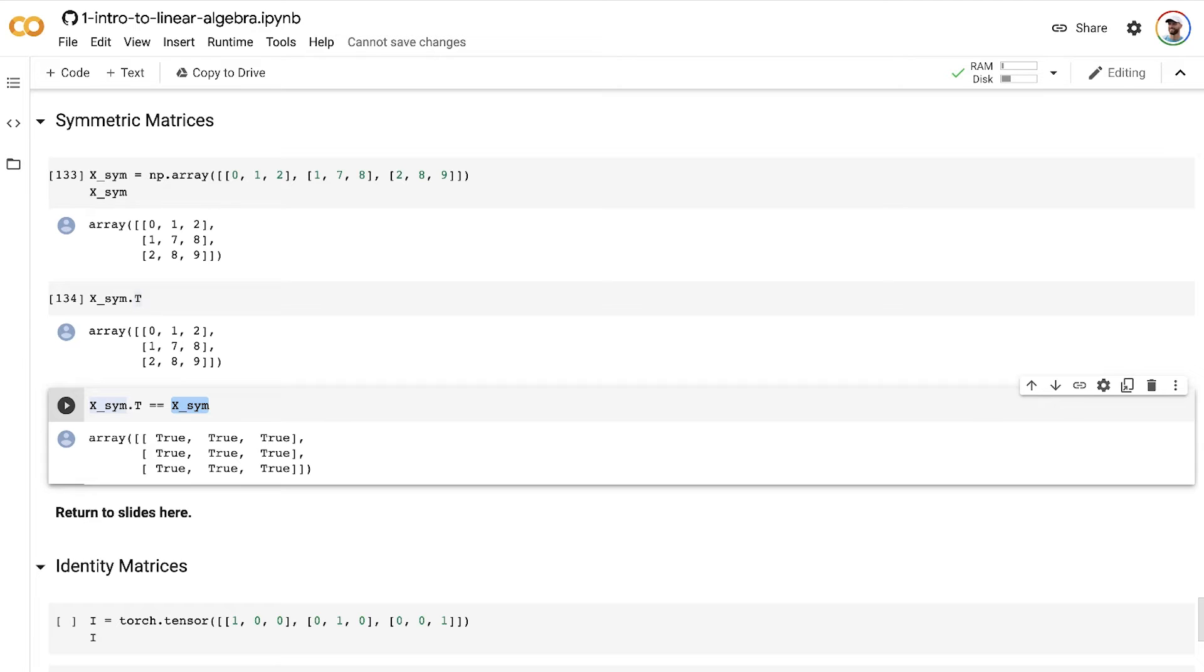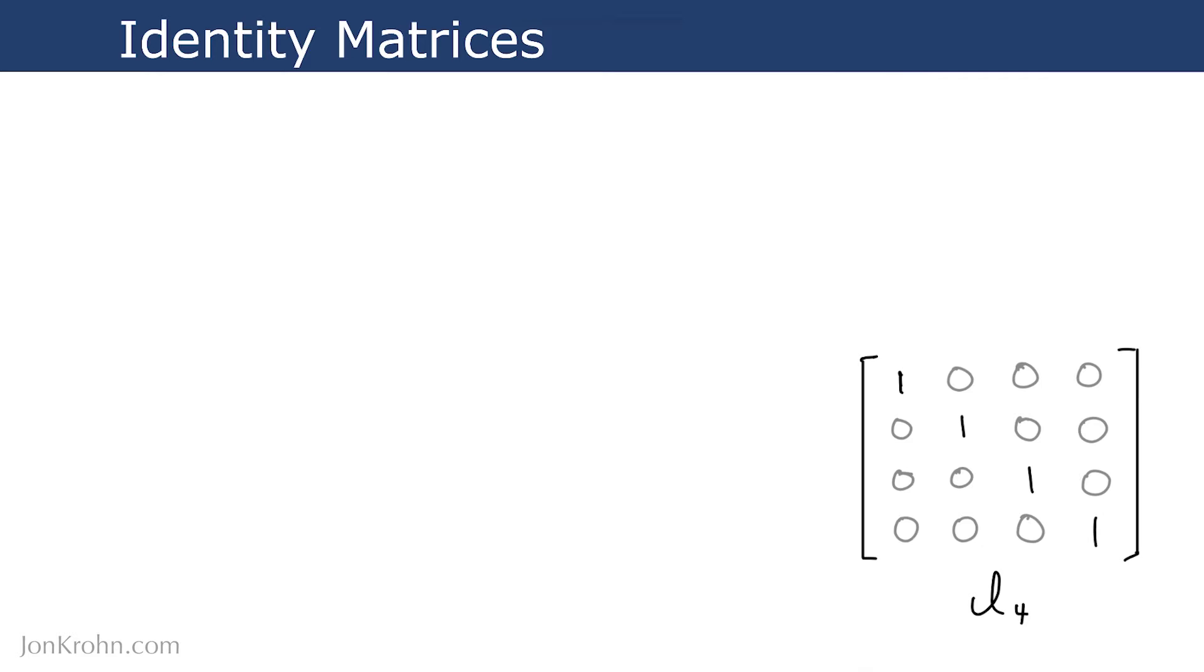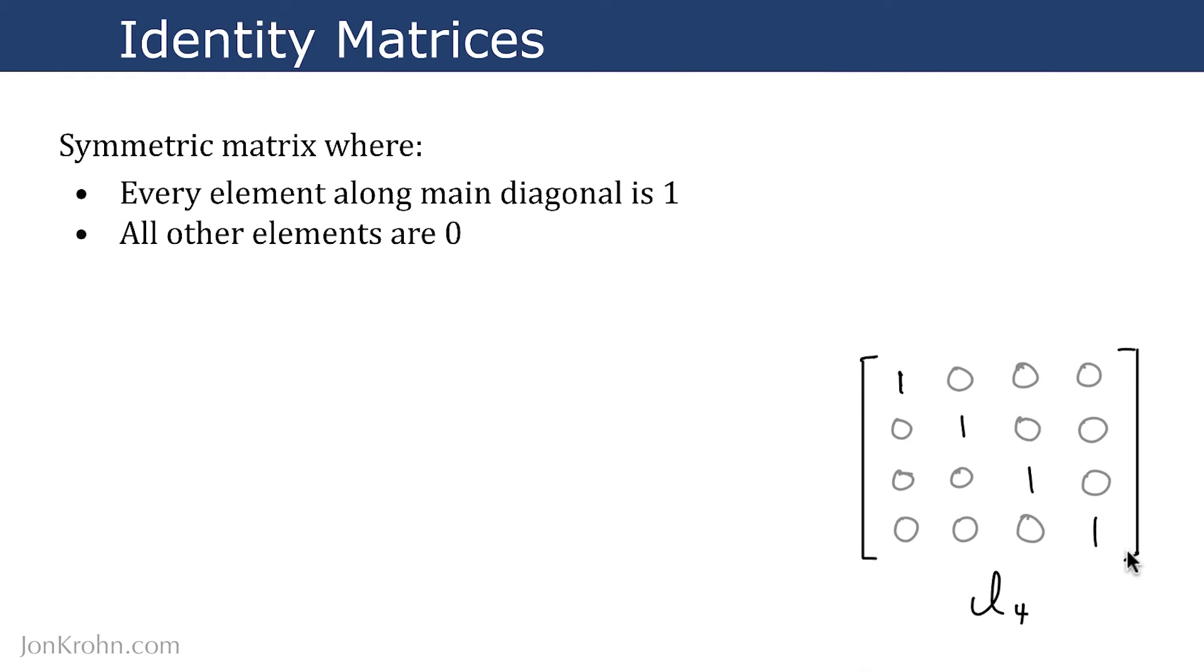Now, let's talk about a special case of a symmetric matrix, the identity matrix. This is a symmetric matrix where every element along the main diagonal is equal to 1. All of the other elements are equal to 0.